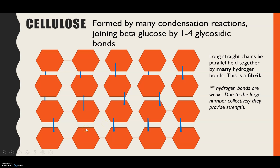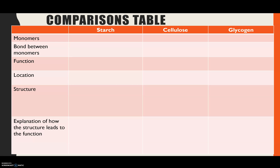The way cellulose provides structural strength is because of the number of hydrogen bonds. An individual hydrogen bond is weak, but due to the large number of them, collectively they provide the strength to the cell wall. And that covers our three polysaccharides.